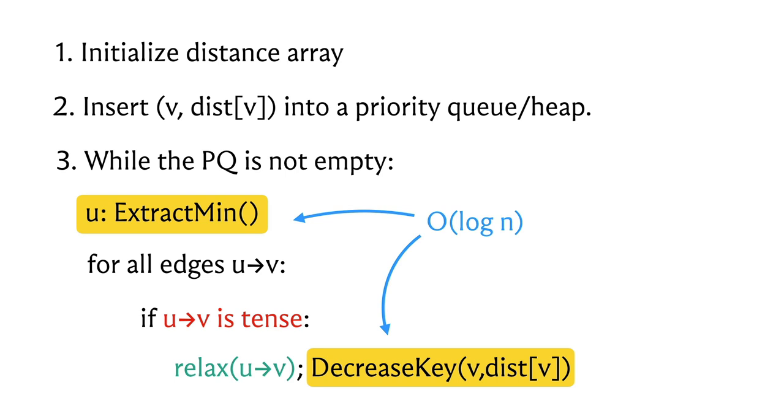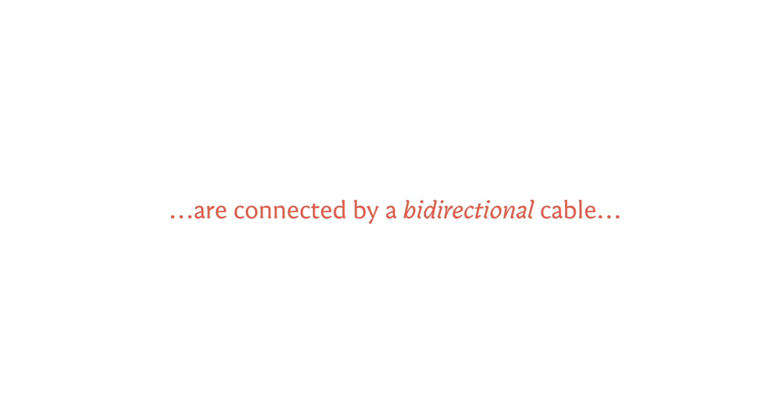The remaining detail is whether the edges are directed or undirected. This is not explicitly stated in the problem statement, but reading the input description carefully you find the phrase 'bi-directional cables.' So the edges are undirected. Although our discussion of Dijkstra's has been in the context of directed graphs, without negative weights everything works exactly the same way — you just need to record all edges as bi-directional when reading input.